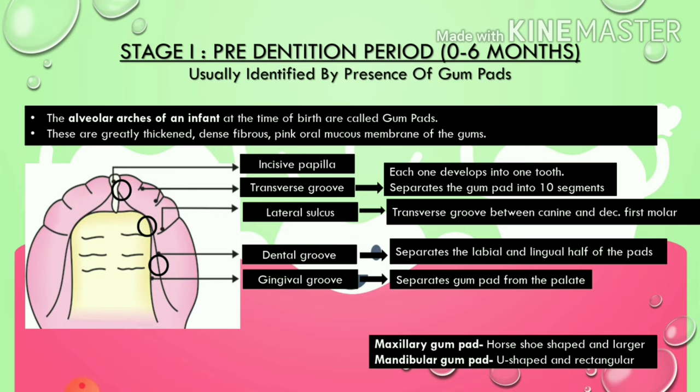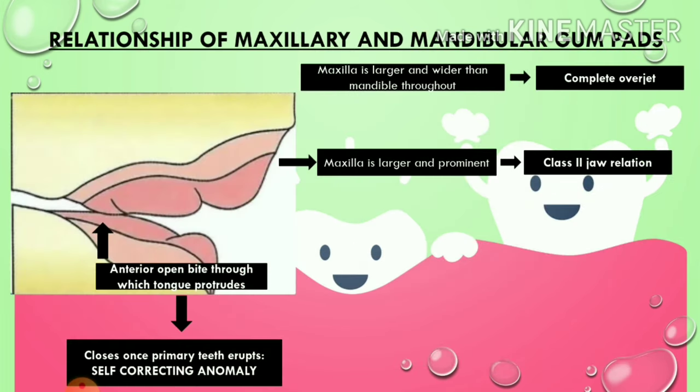The shape of the maxillary gum pad is usually horseshoe-shaped, and it is larger than the mandibular gum pad, which is U-shaped and rectangular. Moving on to the relationship of maxillary and mandibular gum pads.